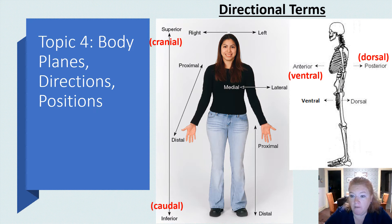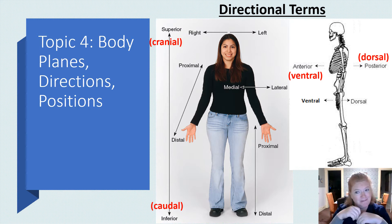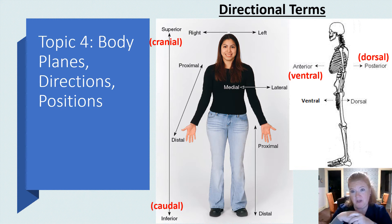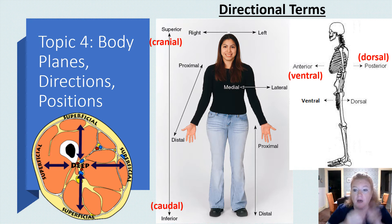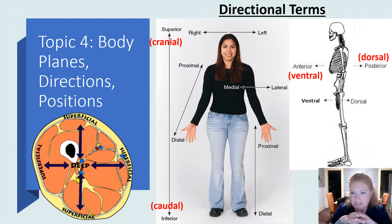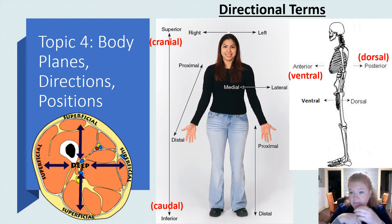You should also know all of the body directions. We reviewed this and there's another video, so if you don't remember, go back and review that. About superficial and deep — there is some confusion. Superficial is at the surface, so a superficial cut is just on the surface of your skin. A deep cut goes further away from the surface, closer to the bone.